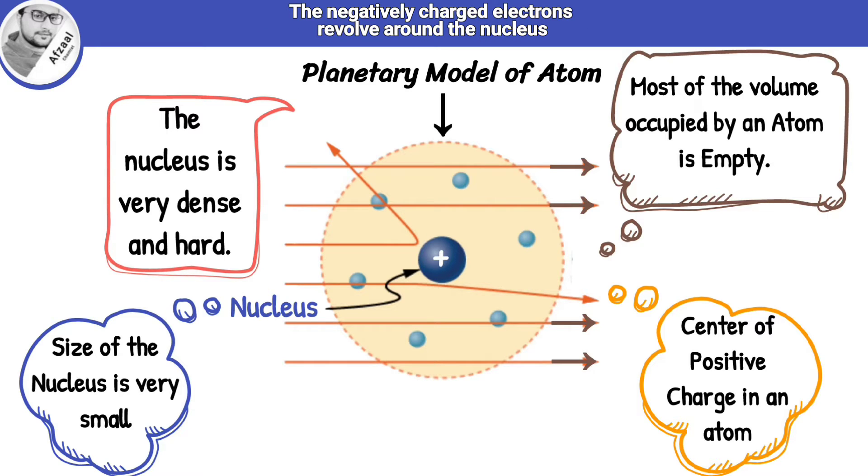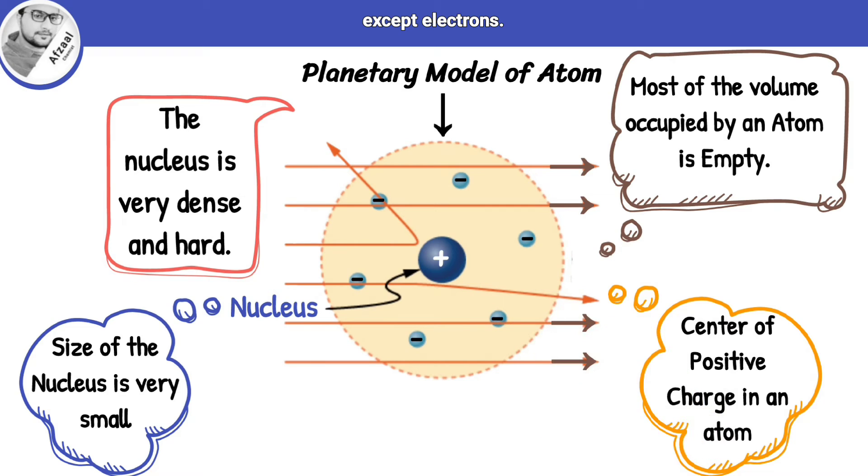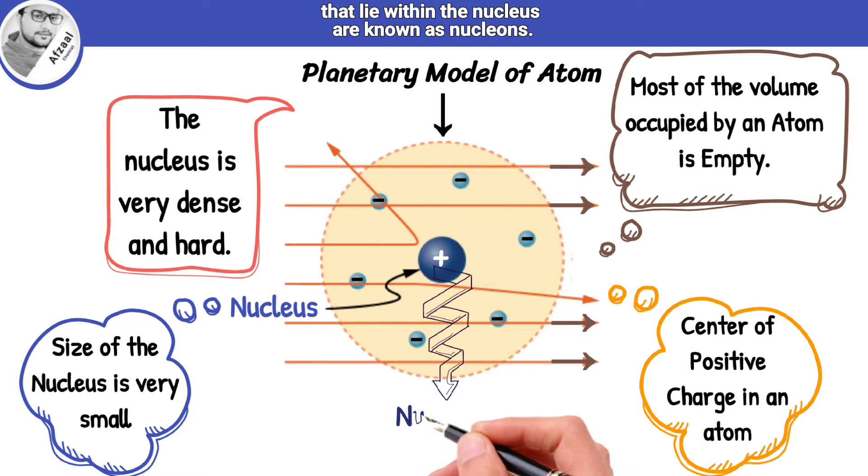The negatively charged electrons revolve around the nucleus. Except electrons, all other fundamental particles that lie within the nucleus are known as nucleons.